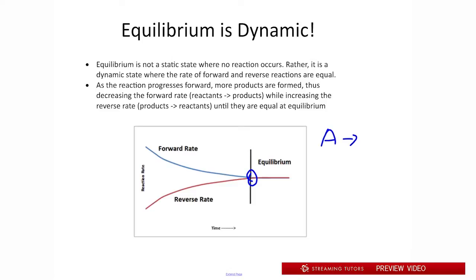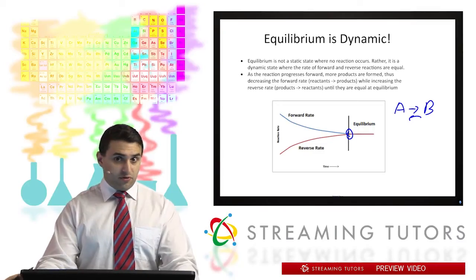So when the forward rate of reaction equals the reverse rate of reaction, you can think about it as the formation of products is going at the same speed as the formation of reactants. So the concentrations of both are staying constant, but they're constantly being interconverted between A and B, the reactants and the products.